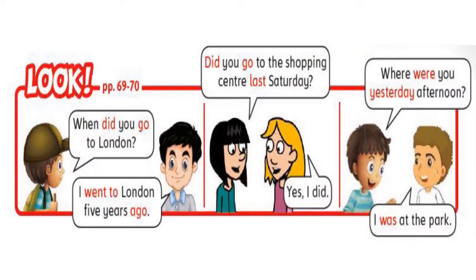Look again — more practice on the past simple tense. 'When did you go to London?' Answer: 'I went to London in 2017.' 'Did you go to the shopping center last Saturday?' Yes, I did. If the answer is no: No, I didn't. 'Where were you yesterday afternoon?' Possible answers: I didn't go anywhere. I visited my uncle. I was at home.